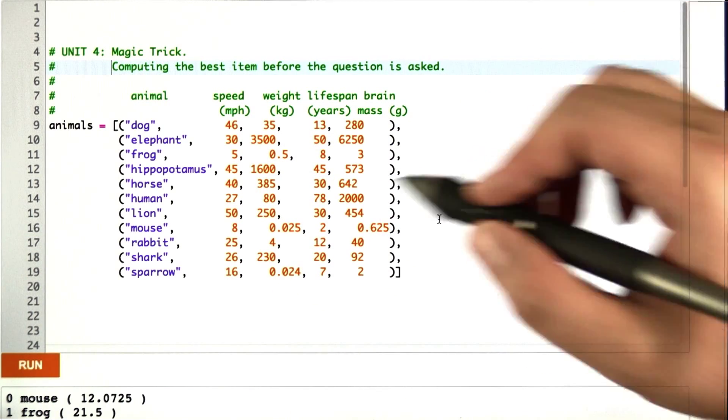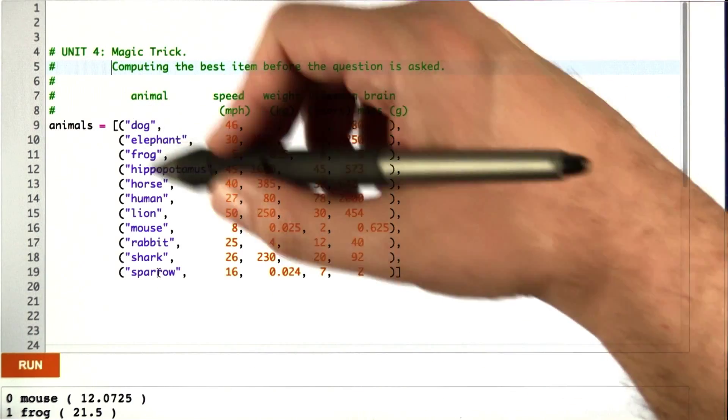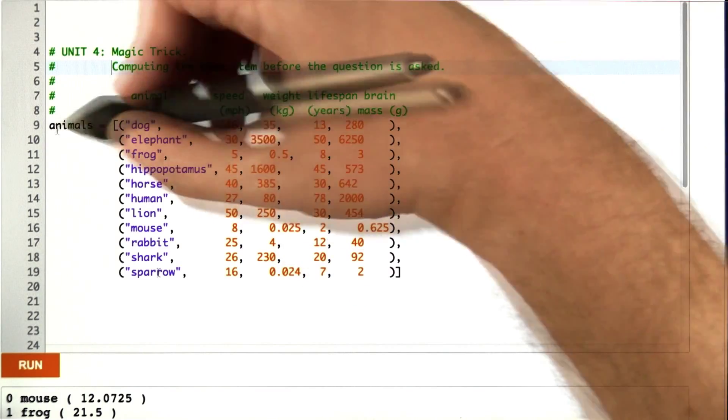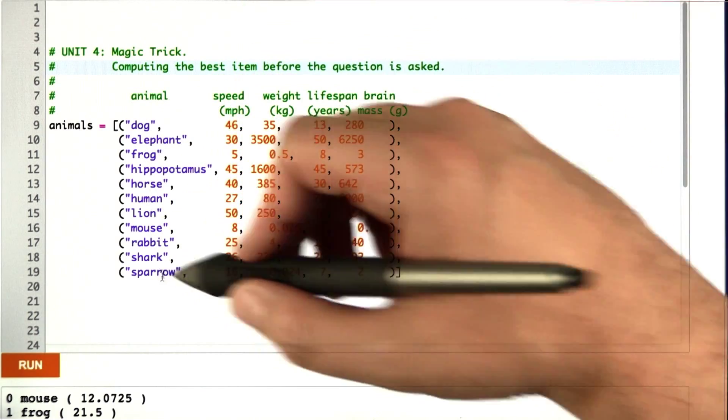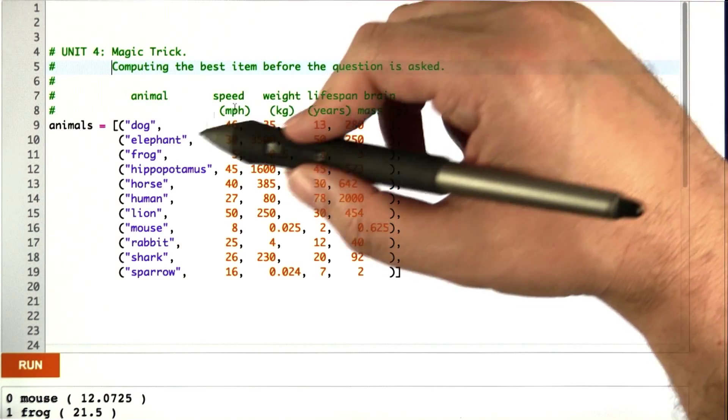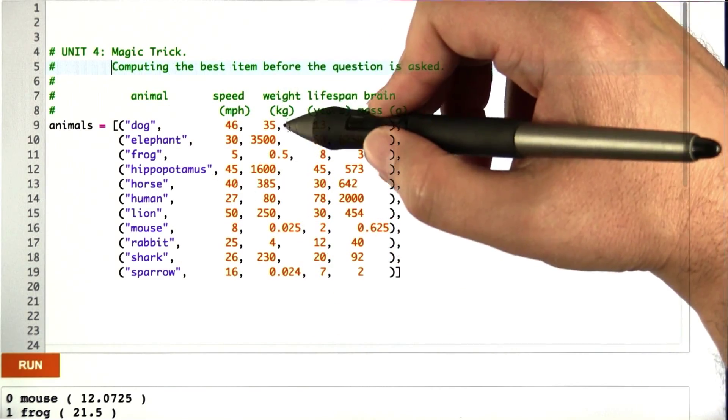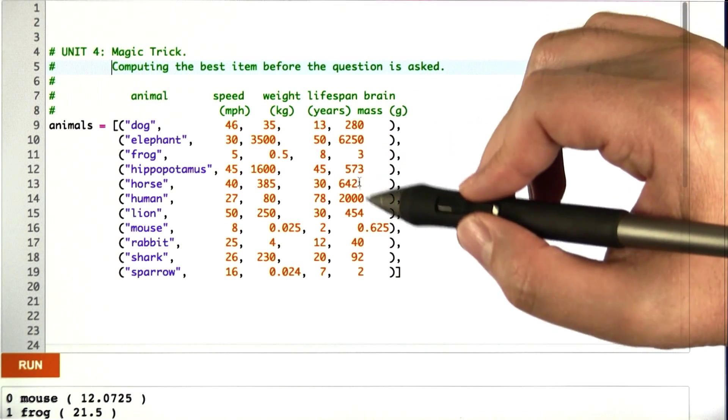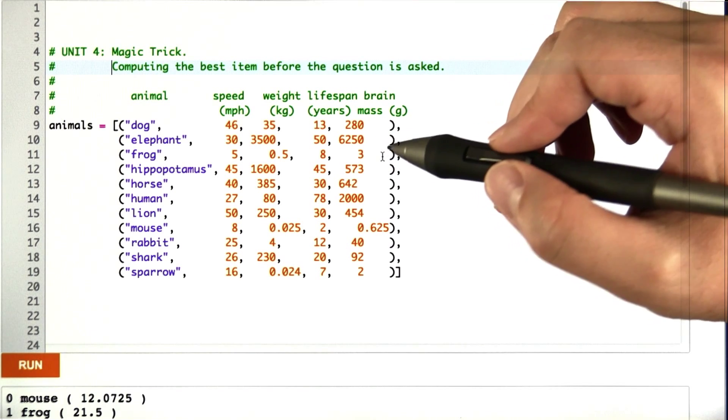I'm going to put a bunch of animals in order with your help. So, here's some data. I have it stored as a Python structure at the moment. We call it animals. It has 11 animals in it, alphabetized dog to sparrow. And I've gone on the internet and looked up the speed, how fast each of these animals is, its weight approximately in kilograms, the lifespan, how long they tend to live, and how big their brains are, measured in grams. I did not go and measure these animals' brains.